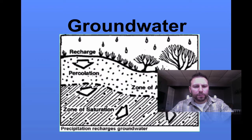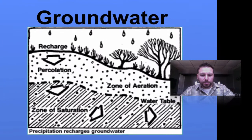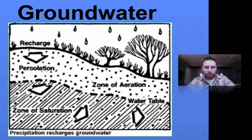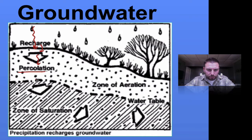When water infiltrates and percolates into the ground, it becomes groundwater. We can see here that precipitation comes down, infiltrating and percolating through the ground, moving through and hitting a few different zones as it moves through.